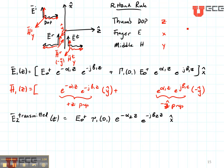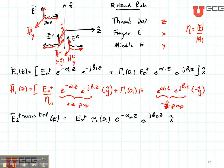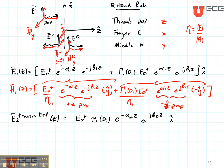Now let's handle the magnitudes. Remember that Eta is E divided by H. We're looking at the magnitudes of Eta. So if I want to find the magnetic field, I just take the electric field and I divide it by Eta. In this case it's Eta 1. Eta 1 is going to be real if region 1 is lossless, and it's going to be imaginary or complex if region 1 is lossy. So there's my magnetic field for region number 1 — here is the incident magnetic field and here is the reflected magnetic field.